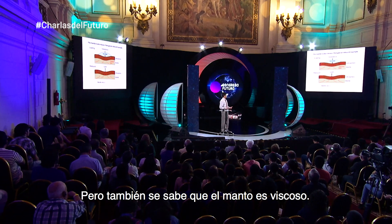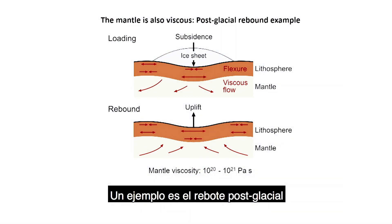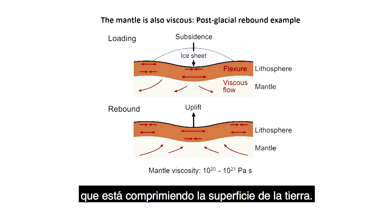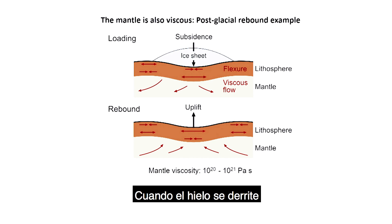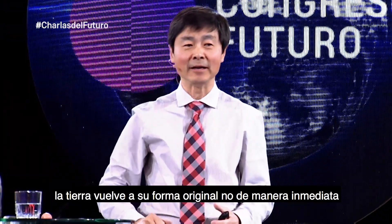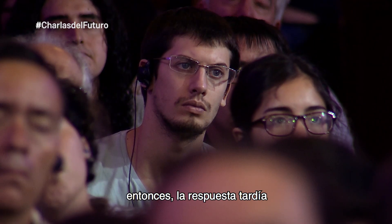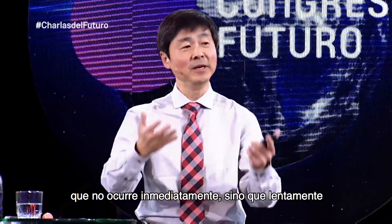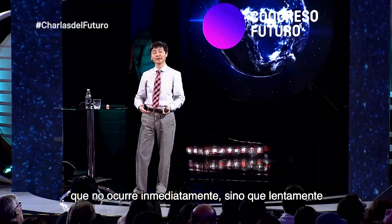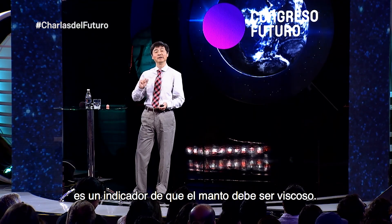But we also know the mantle is viscous. One example is post-glacial rebound: glaciers and ice sheets depress the surface of the Earth, and when the ice melts, the Earth does not bounce back immediately—it bounces back very slowly. This delayed, slow response is an indication that the mantle must be viscous.